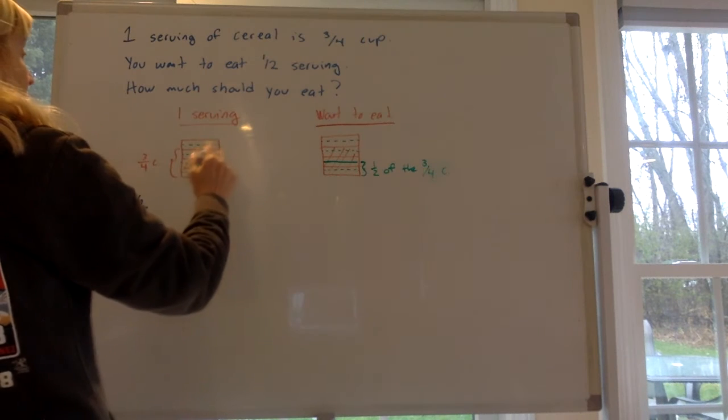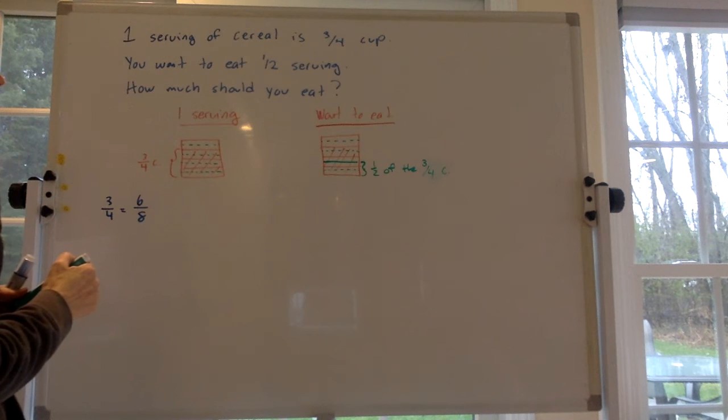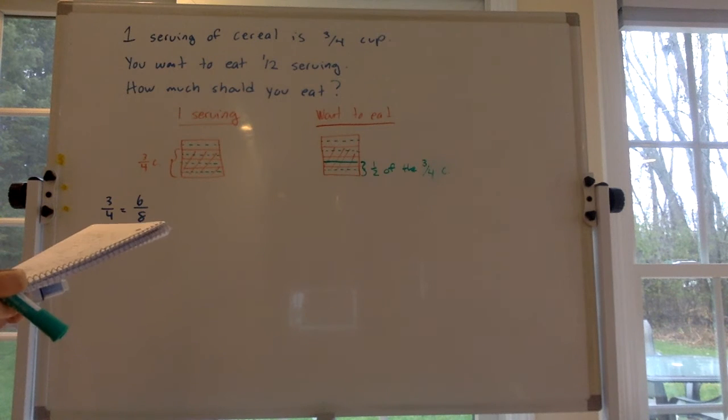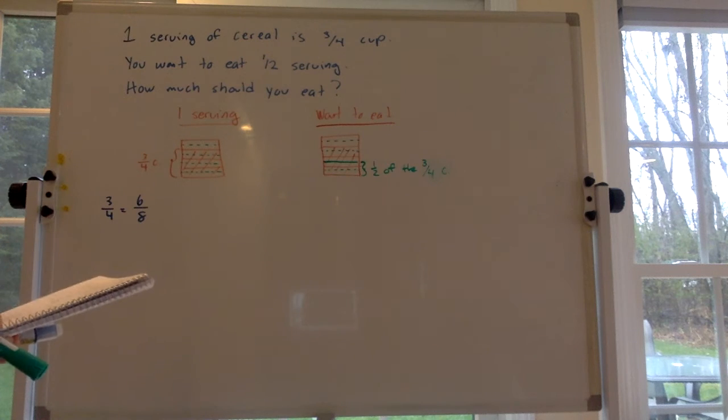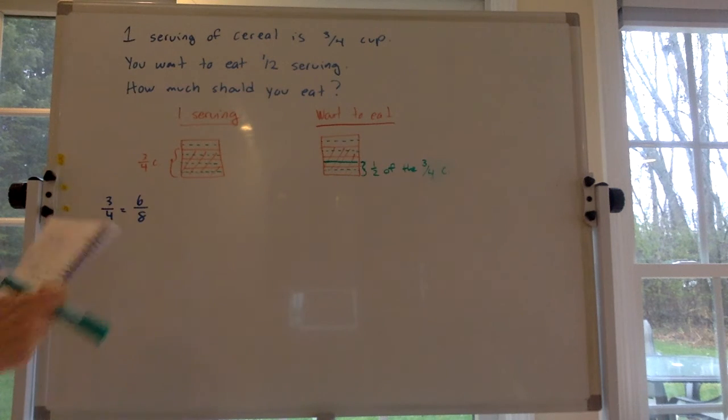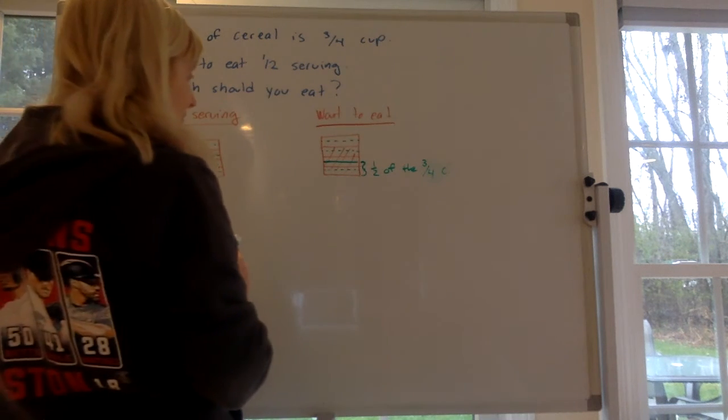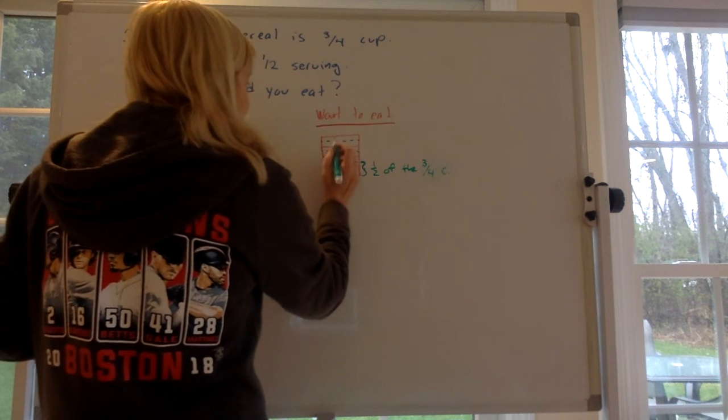So let's see. Six of those blocks are shaded there. So a serving is six-eighths. But we only want half of a serving. So we want half of these six blocks.